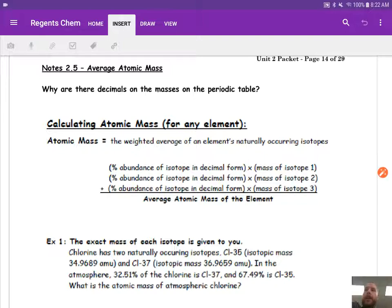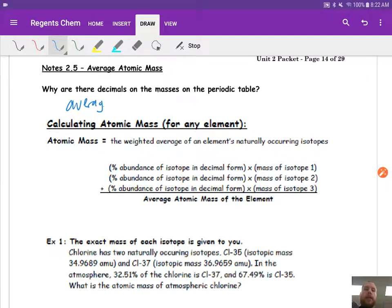Well, this goes right along with our last video on isotopes. It's because the masses that we see there, they are the average, the weighted average, that's a key, the weighted average of all the naturally occurring isotopes of each element.